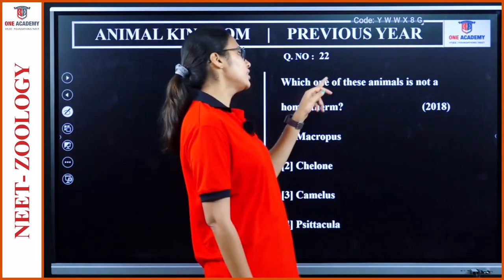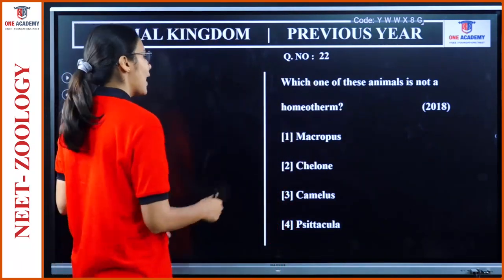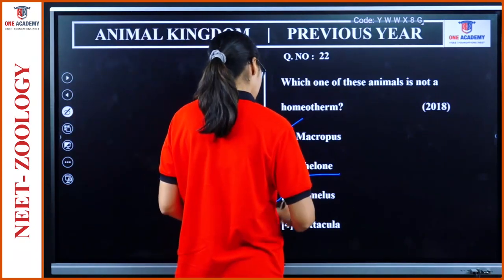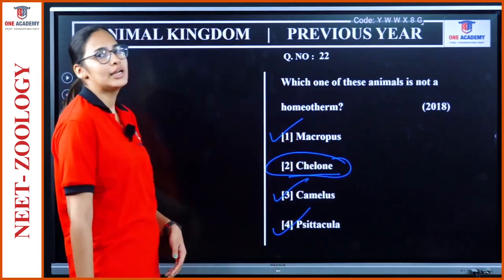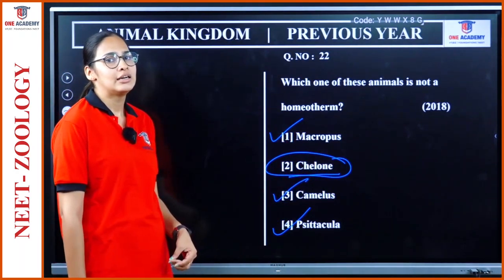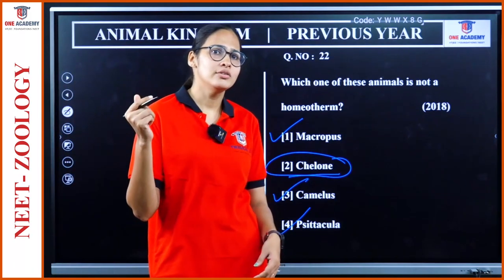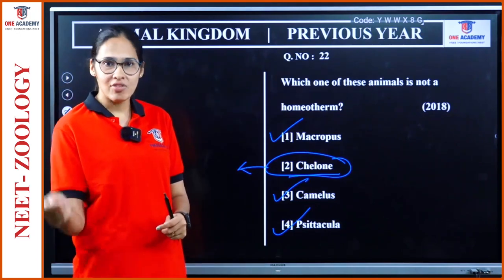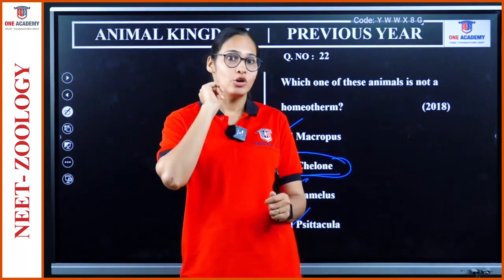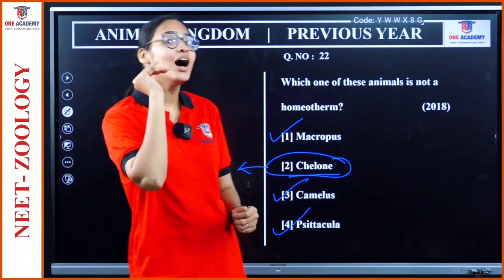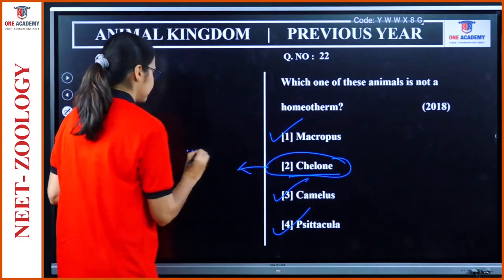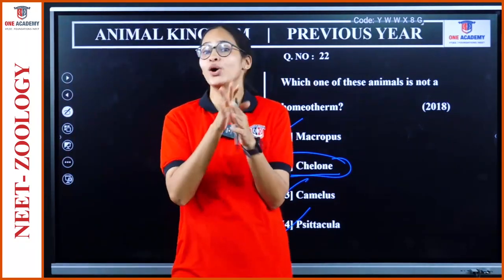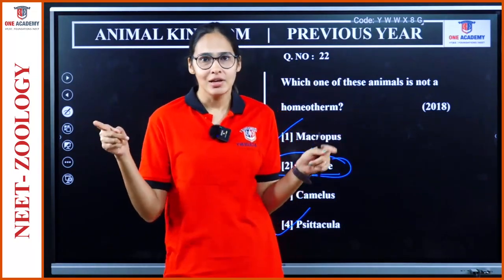Question 22: 'Which of these animals is not a homeotherm?' Macropus is homeotherm. Chelone is a poikilotherm — that is the answer. Camelus is homeotherm. The code to remember: Chelone is a turtle — a reptile, and reptiles are poikilotherms. Please refer to the reptilia video for the code. Option 2 — Chelone — is the answer.